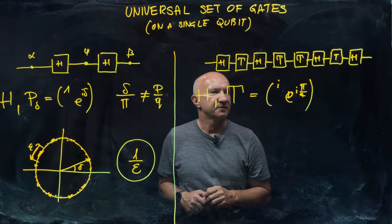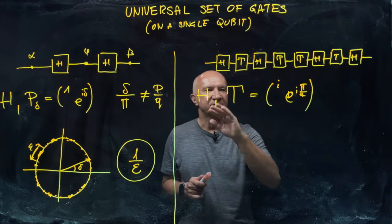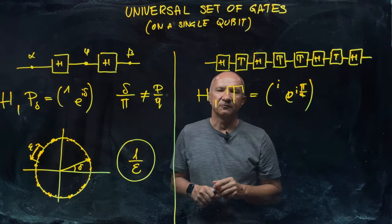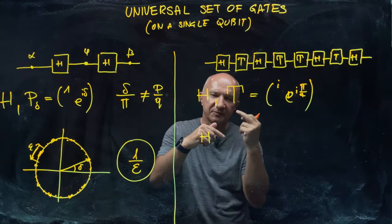So in terms of the Bloch sphere, it's the rotation by 45 degrees about the Z axis. Now, that's clearly not a rational multiple of pi. So you may just wonder what's going on here. Why would we choose this set of gates? Well, it turns out that if you concatenate those gates in the right way, then you get what you want. So you recognize the Hadamard as the gate that swaps, in terms of the Bloch sphere, Z and X axis.